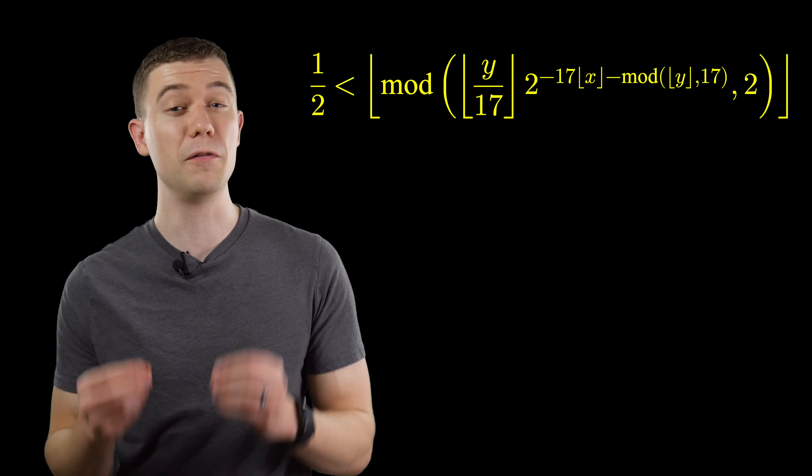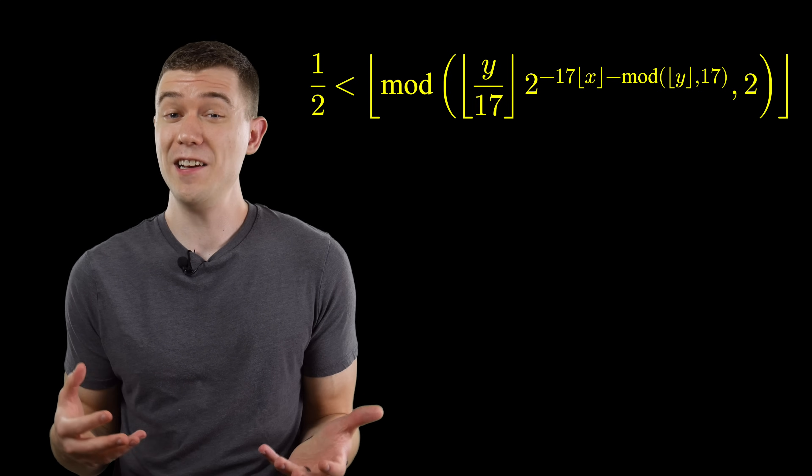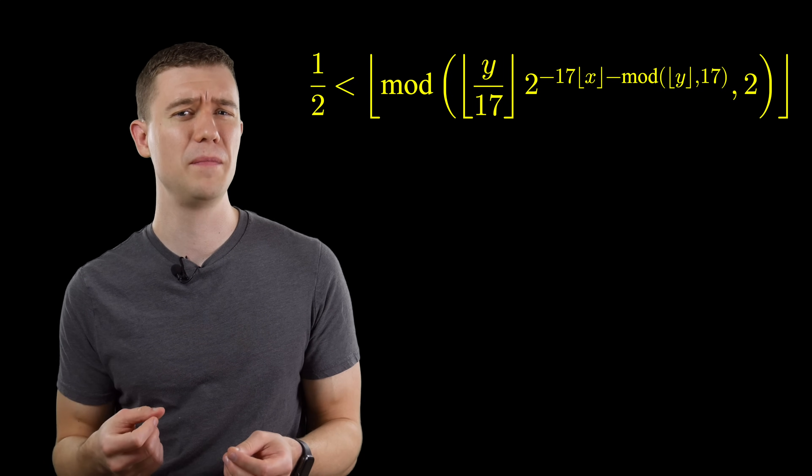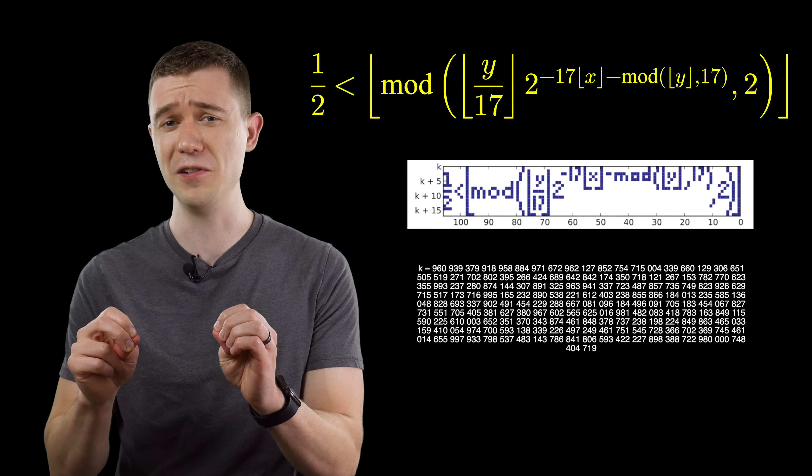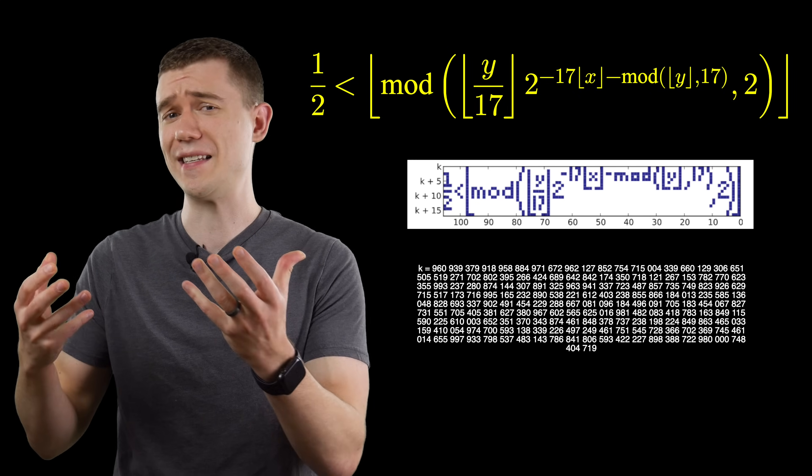Numberphile made a video for the number 2 spot on my list, but it's just too good and incredible to leave off. This Tupper's self-referential formula. It's an inequality, not an equation, maybe it shouldn't be on my list, but if you graph this inequality at certain values, it graphs itself.